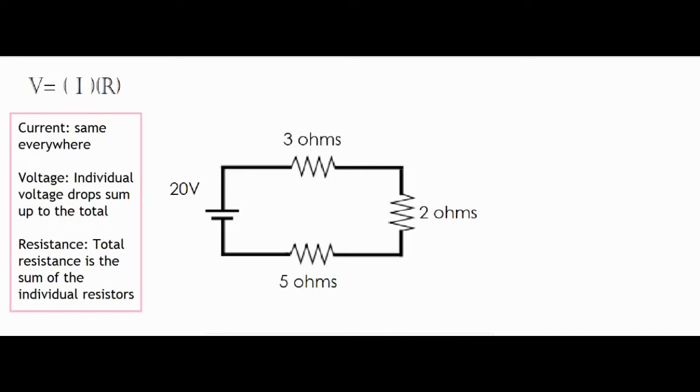Number two: the voltage. The individual voltage drops sum up to the total. So the total is 20 volts. It's going to drop all 20 volts and use a portion of that 20 volts through each of these resistors.